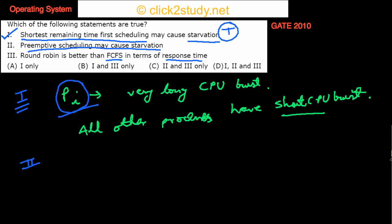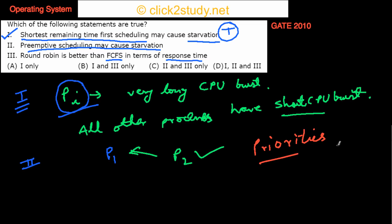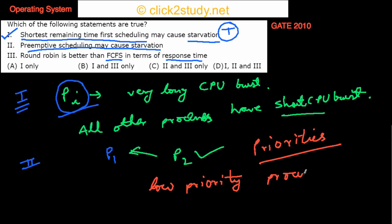In preemptive scheduling, if a process is running, some other process may come and preempt it — kick it out and start running itself. So suppose P1 is running and P2 comes and kicks P1 out and runs on the CPU. In preemptive scheduling, you can definitely have starvation — think about priorities. If a process has very low priority and all other processes have higher priorities, the low priority process will never get the CPU and will starve.